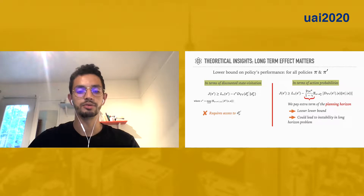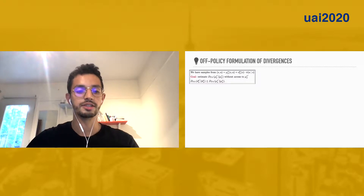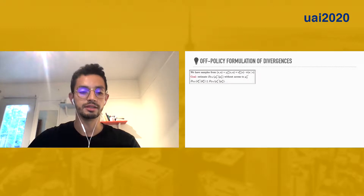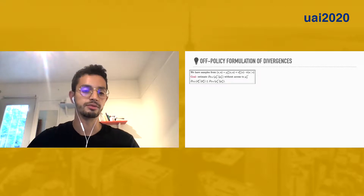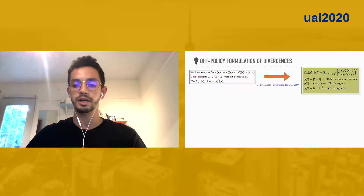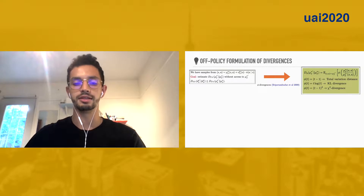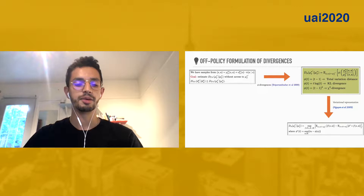First of all, it is more convenient to work with the state-action visitation distribution mu, which we denote by mu-pi instead of d-pi. Our goal is to estimate the divergence between mu-pi-prime and mu-pi without accessing mu-pi-prime. We know that the total variation distance belongs to the class of phi-divergences, whose expression involves a convex function phi. But this expression is not practical because we need the analytic expression of mu-pi-prime. That is why we use a variational representation that casts the measuring of the divergence into an optimization problem over a function class f.